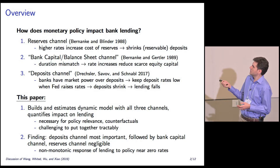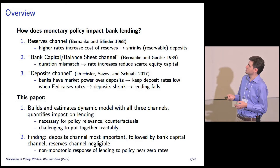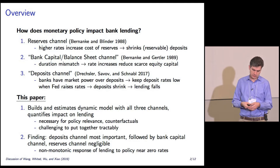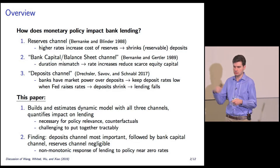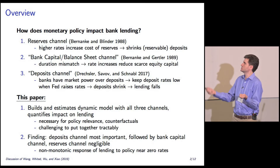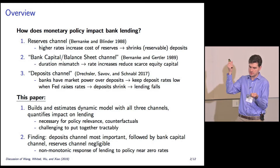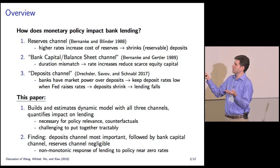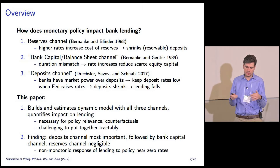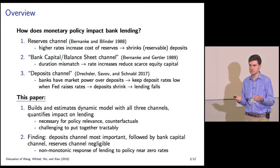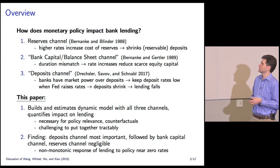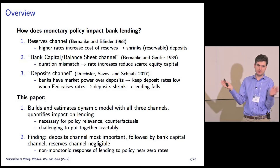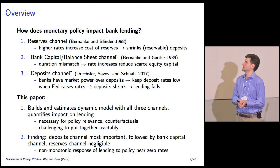Then there's the bank capital or bank balance sheet channel — the spirit of Bernanke and Gertler. Banks have a duration mismatch: long-term assets, short-term liabilities. So when you increase rates, that causes the assets to fall more than liabilities. The equity capital of the banks falls, and then if there's a capital constraint or capital can't be issued, that causes banks to contract their balance sheet.